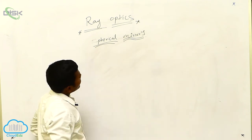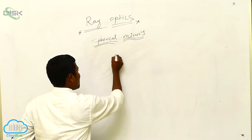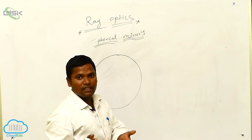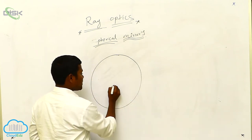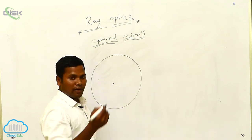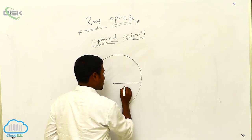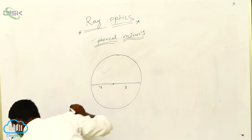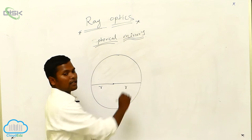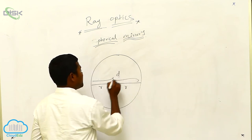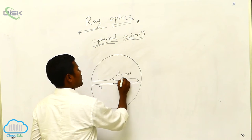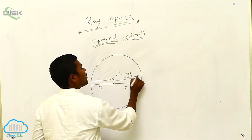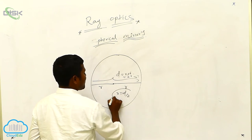How can we get spherical mirrors? I'll give an analogy. Consider one circle — a hollow sphere — with a center point. If I draw a line from the center, that is the radius. The total distance across is the diameter D, which equals R plus R, so D equals 2R, and therefore R equals D divided by 2.